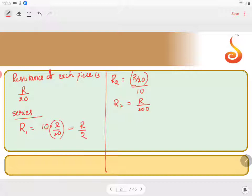Now this combination, these combinations are connected in series. What does it mean? R1 and R2 are connected in series. So what is the effective resistance between A and B? The effective resistance between A and B will be equal to R1 plus R2.